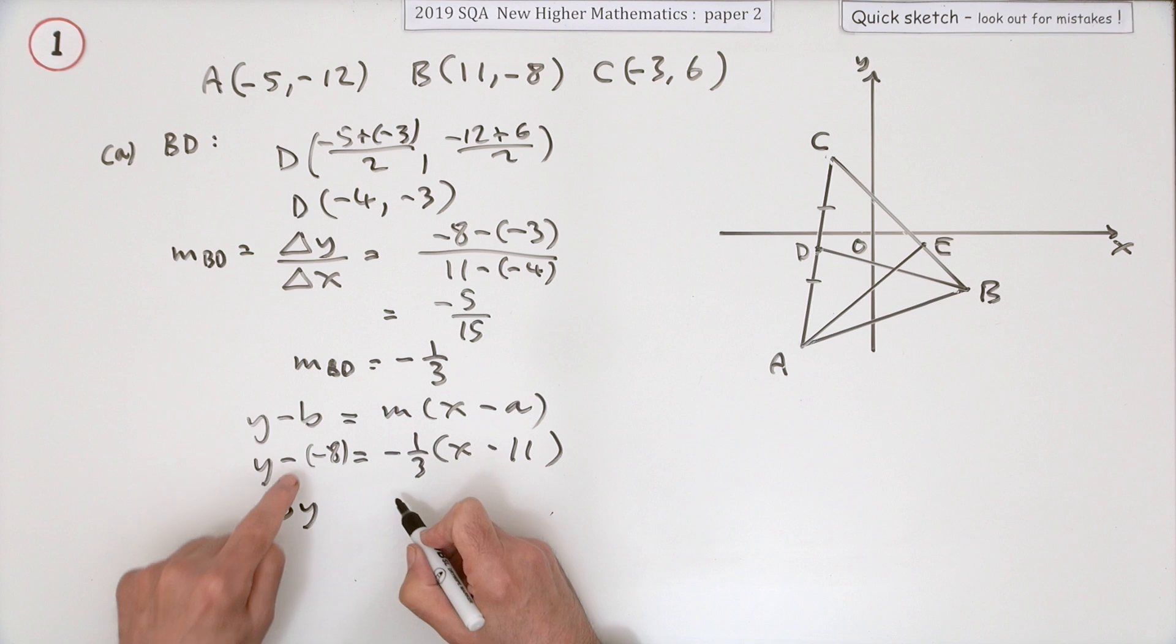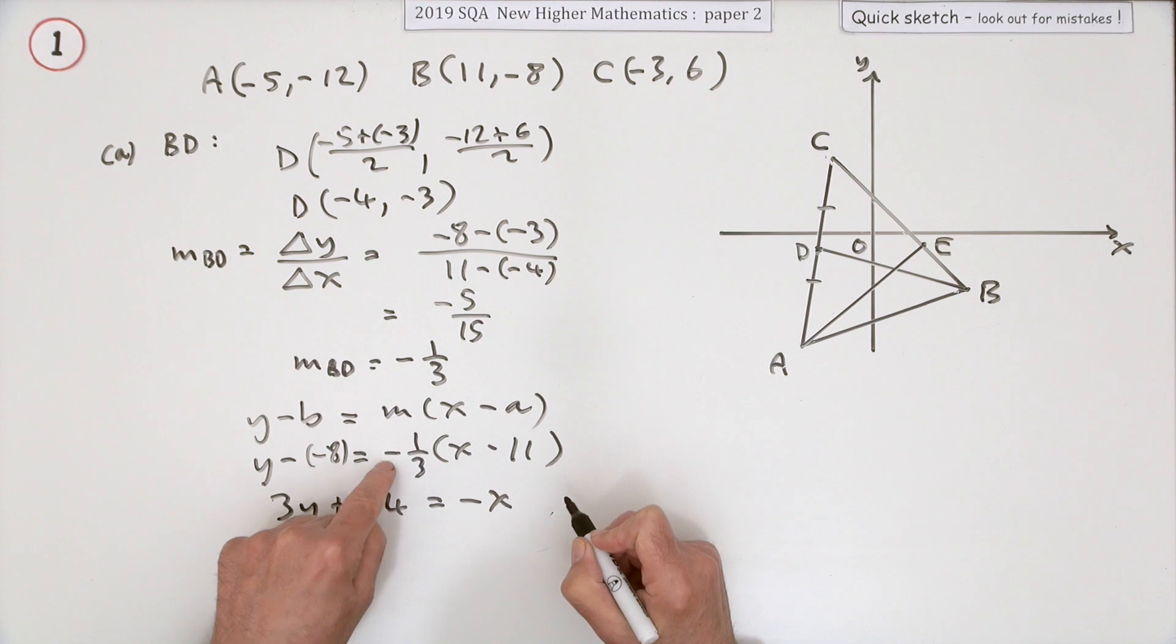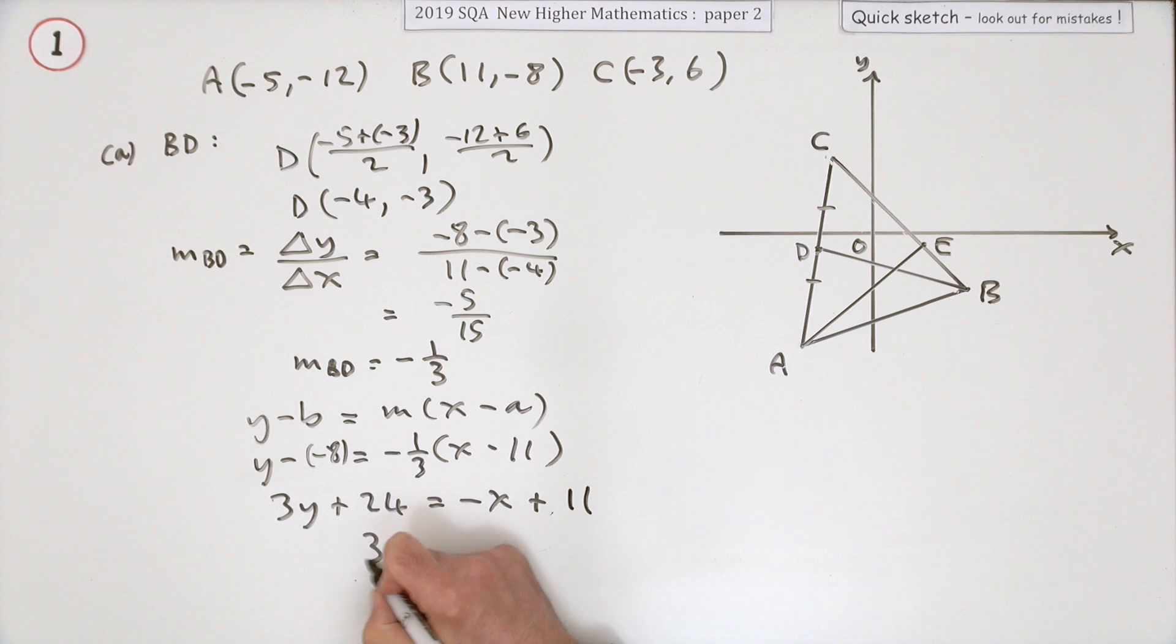Take the 3 across and multiply, leave the negative in this side. That's 3 times it plus 24 with that negative staying there, that'll be -x and that negative times negative means it'll end up as +11. Rearrange it into any order you like. I'm just going to keep it as 3y is -x, bring that across as -24, so that gives me -13.